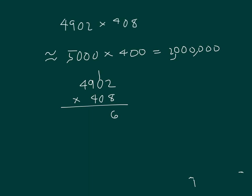8 times 0 is 0, plus 1 is 1. 8 times 9 is 72. 2, regroup of 7. 8 times 4 is 32, plus 7 is 39. So I have 4,902 times 8 does give us 39,216.